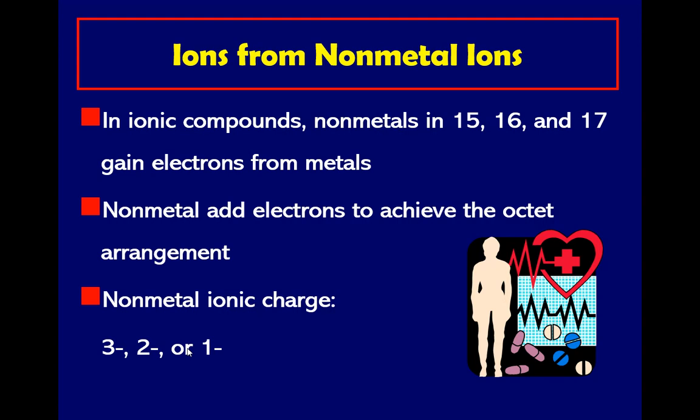So ions from non-metal ions. In ionic compounds, non-metals are located in family number 15 or family number 5, family number 16 or family number 6, and family number 17 or family number 7. They gain electrons from metals. Metals lose electrons; those electrons are being used by the non-metals, so that's why bonding occurs.